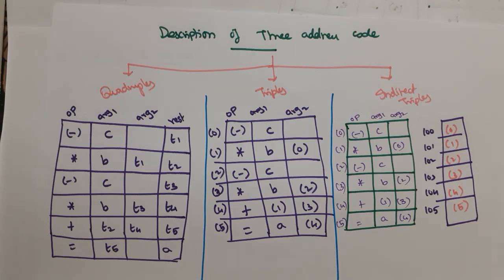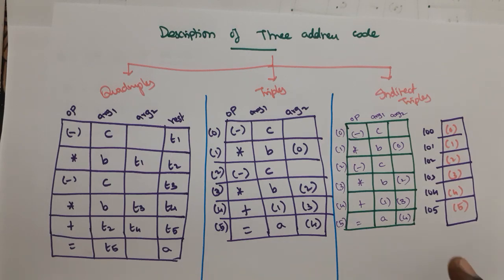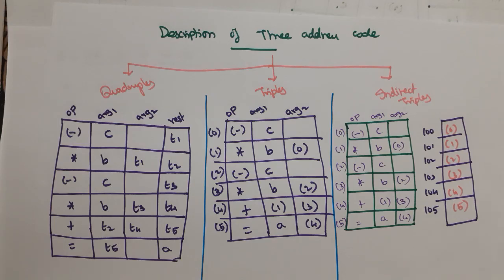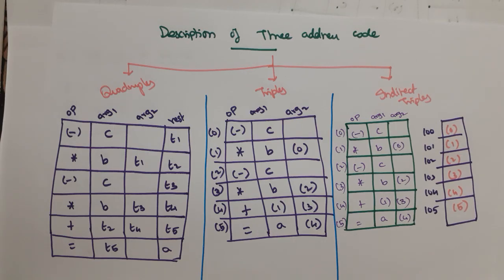Indirect triple is used while optimizing the code. When a code is optimized, the code optimizer rearranges the code in some other order. In triples, the positions change each time. But in indirect triples, only the way of execution changes. For example, minus c is executed twice; instead of having it twice, we can call it once. This is called an indirect triple, and it helps in code optimization techniques. These are all the ways in which an intermediate code can be represented. Thank you.